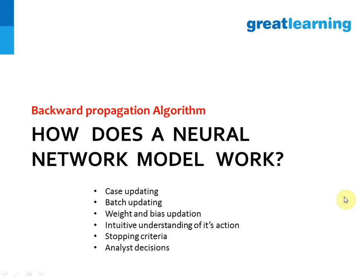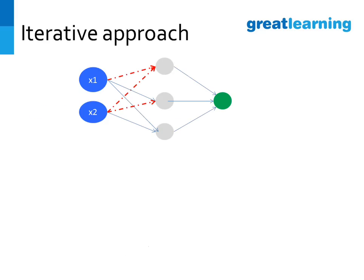Let's understand how a neural network model works. We are going to understand the backward propagation algorithm and in this process we will cover several terms like case updating, batch updating, how weights and biases are updated, and an intuitive understanding of why it works. We will also understand the stopping criteria and the analyst decisions that can affect the operations of a neural network.